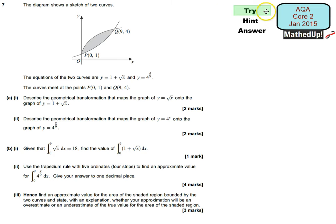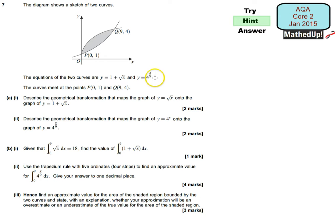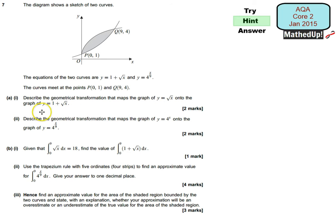Okay, well done if you managed to have a go. I'm now going to give you a hint as to how you can go about answering this question. We're given this diagram here and we're told the equations of the two curves shown are y equals 1 plus root x, and y equals 4 to the power of x over 9. Part A says describe the geometrical transformation that maps the graph of y equals root x onto the graph of y equals 1 plus root x. You need to think about what's happened to the y coordinate and what transformation has actually happened.